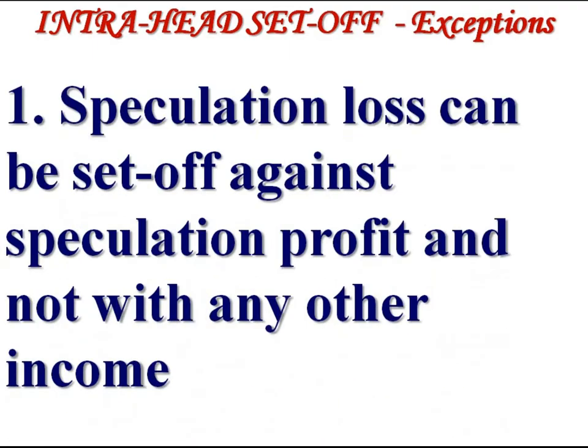The first exception is speculation losses. Speculation losses come under income from business. Under income from business there may be speculation business and non-speculation business. Speculation losses can be set-off only against speculation profit and not with any other income in the same head. The rule is that speculation losses can be set-off only against speculation income, not with non-speculation income.